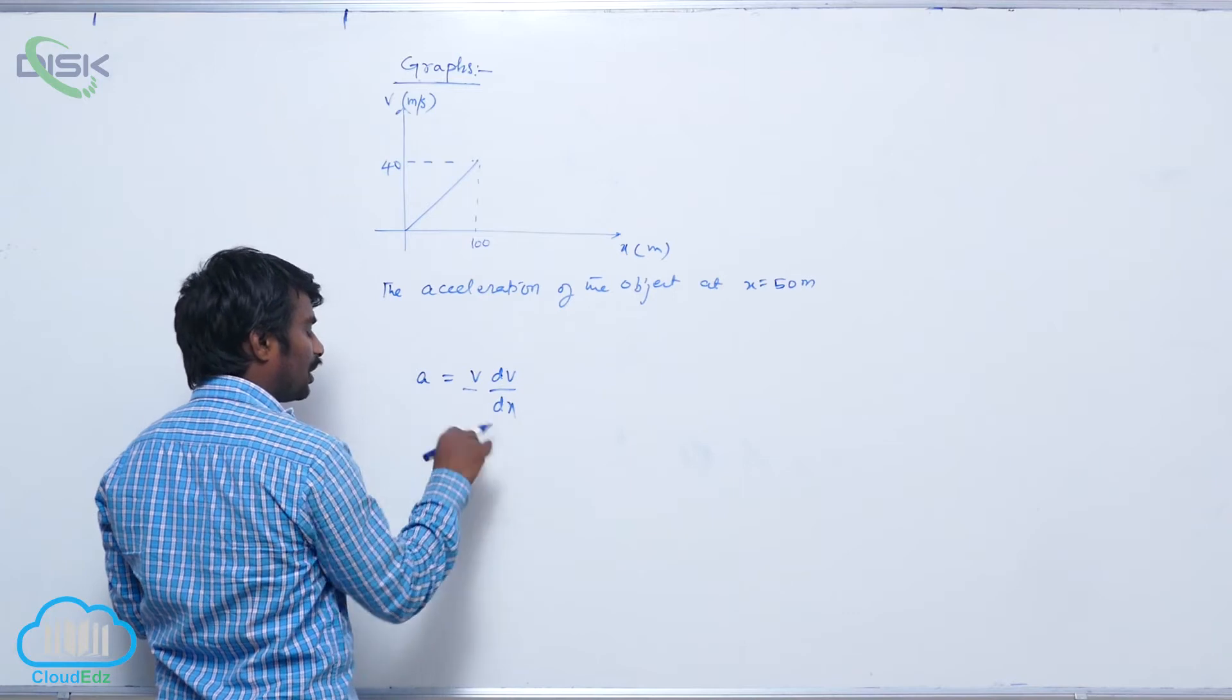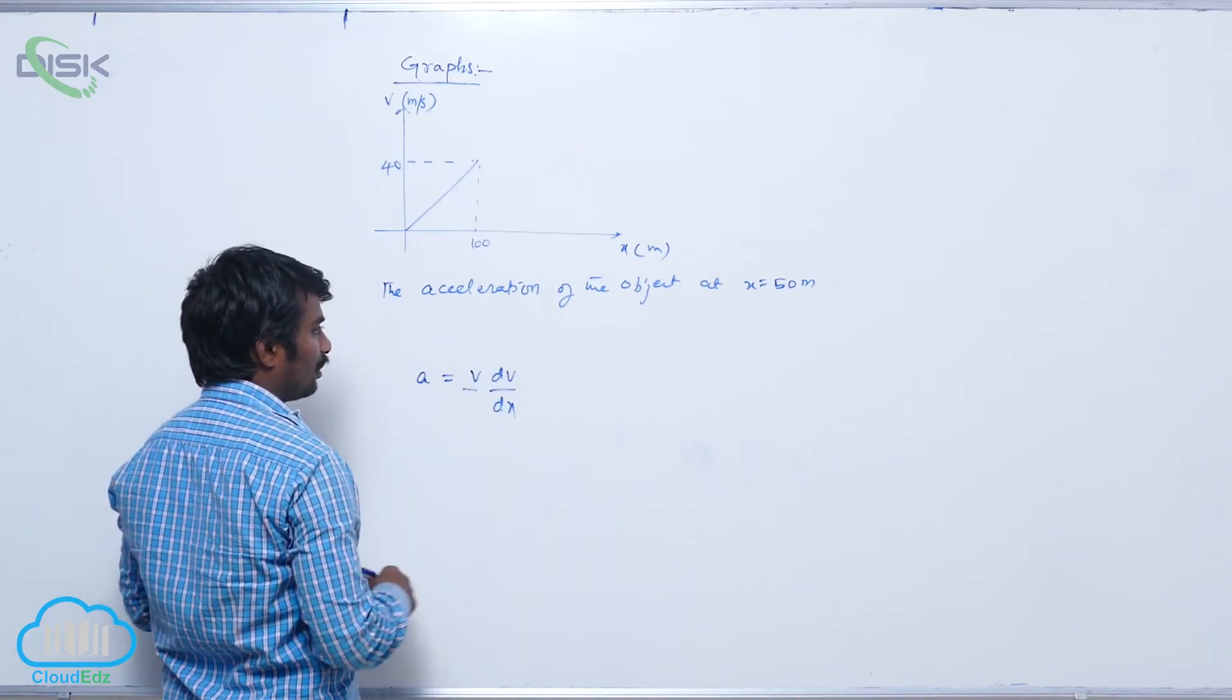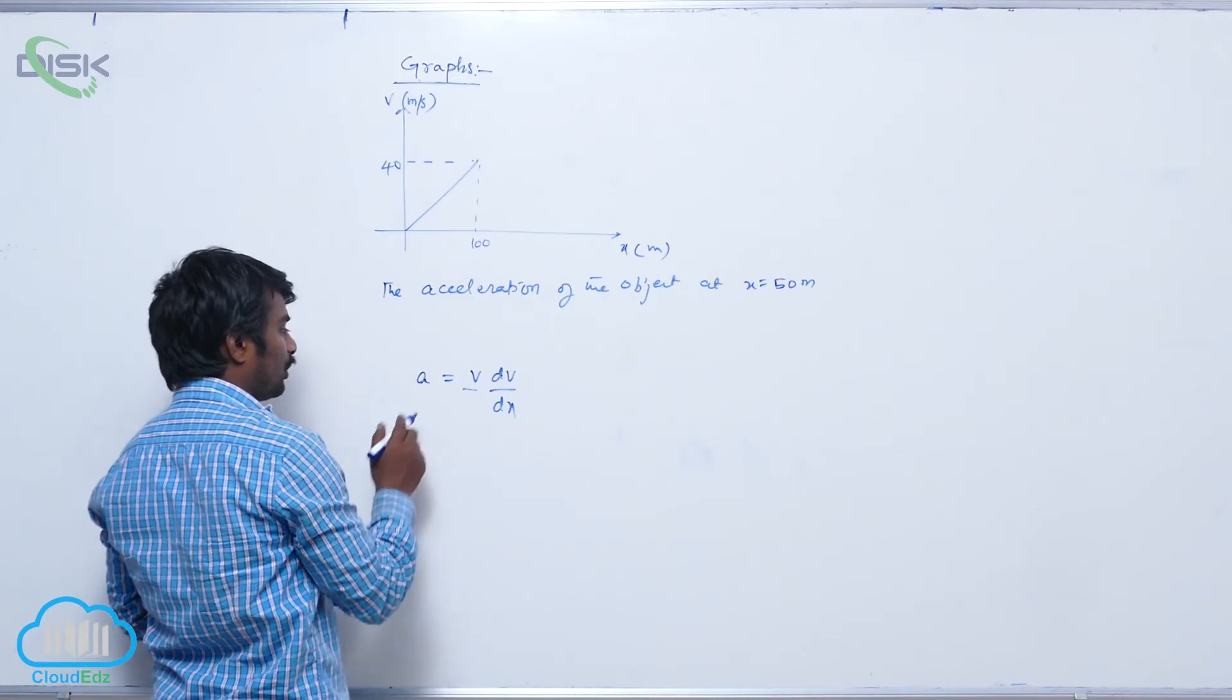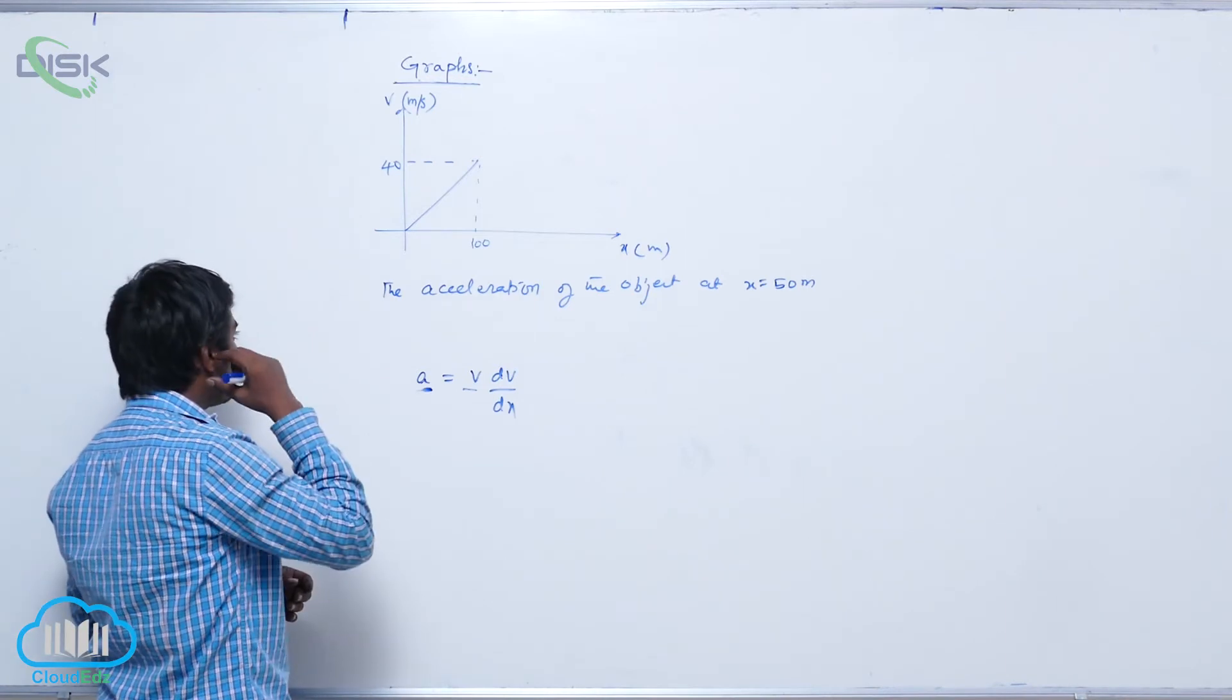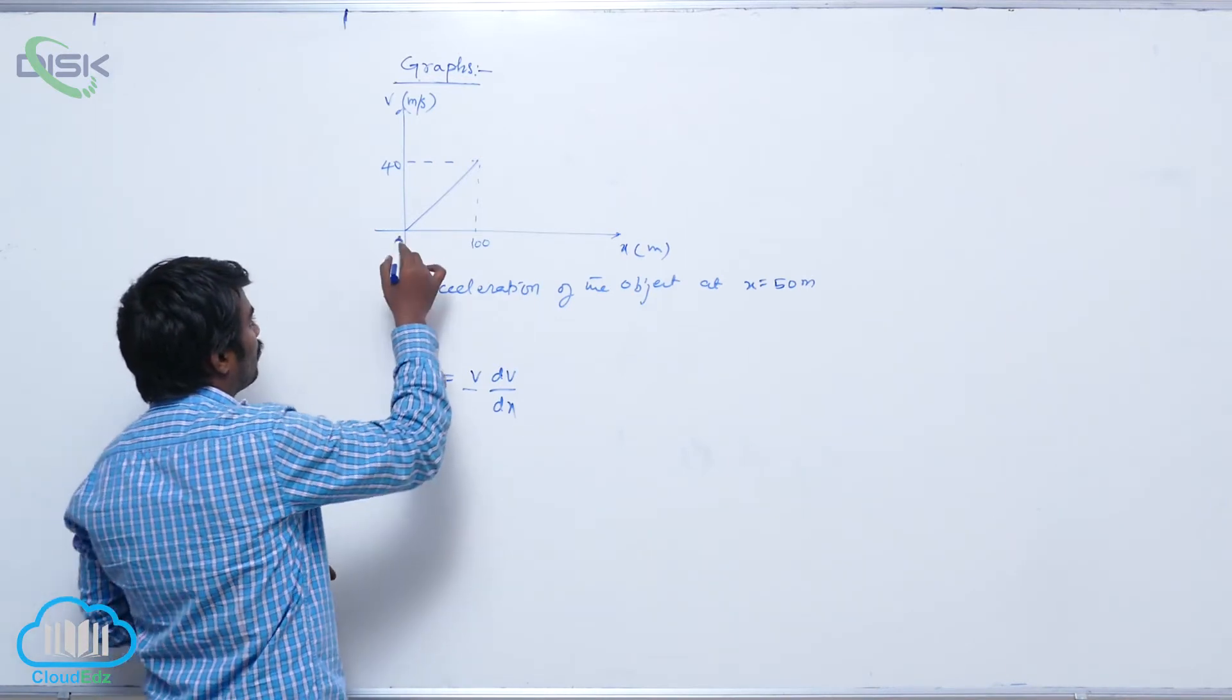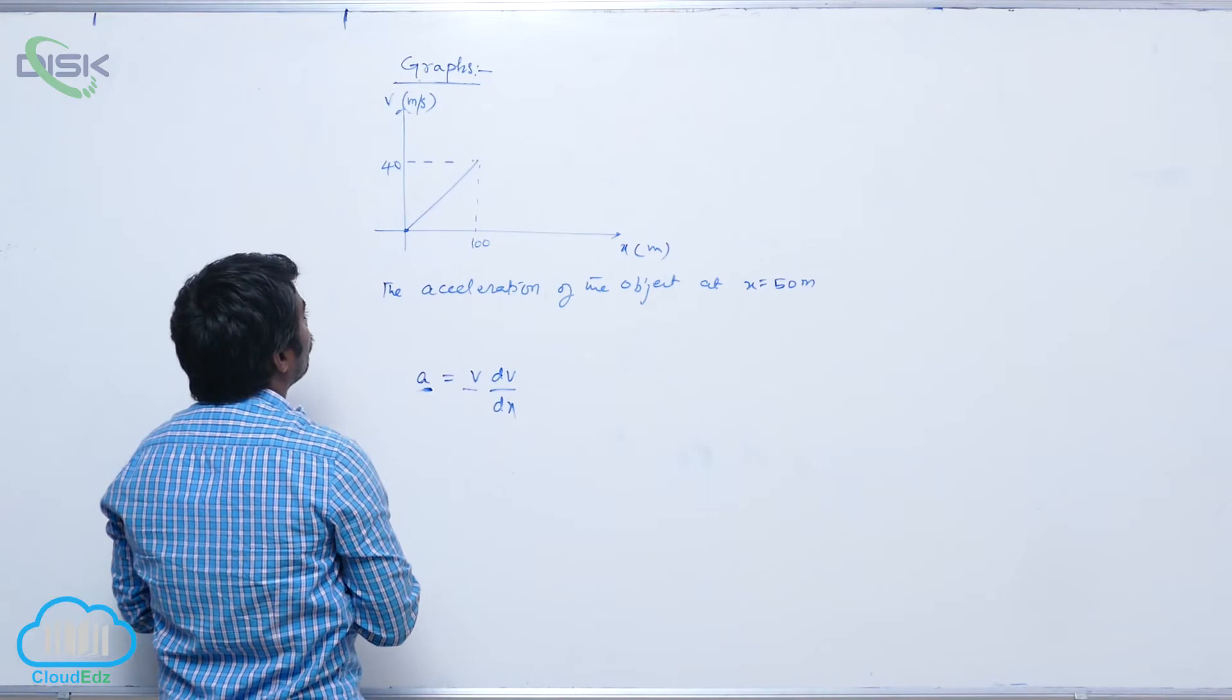With velocity as a function of x and its differentiation with respect to x, by substituting x equals 50 meters, you will be getting acceleration at that distance. But it is passing through the origin, there is no intercept.